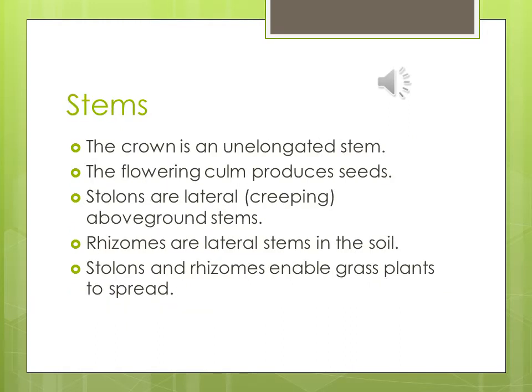Stems: the crown is an elongated stem. The flowering culm produces seeds — the seed head from the diagram. Stolons are lateral, or creeping, above-ground stems. Rhizomes are lateral stems in the soil. Stolons and rhizomes enable grass plants to spread. More of your warm season grasses spread with stolons and rhizomes — a characteristic of warm season grasses. These definitions are pop quiz and testable.